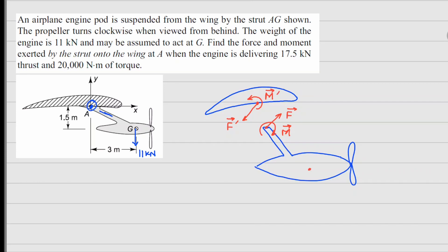Now, the other forces on the system are this weight, which is 11 kN, and there is a thrust. I am assuming that this is passing through the center of the propeller and this is 17.5 kN. And then there is this torque. Now, because it says that when we are looking at it from the back side, it rotates clockwise.